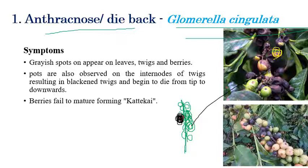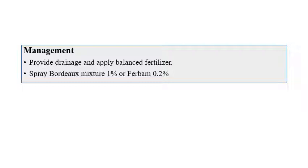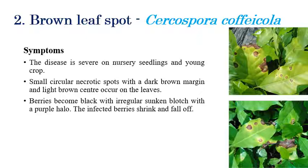The berries are completely converted into black color, and the twig also converts into black color from the tip downwards. Coming to the management aspects: provide proper drainage along with balanced fertilizer application, along with spraying of Bordeaux mixture at 1% or Thiram at 0.2% to manage this disease.